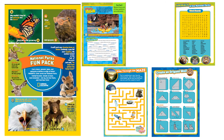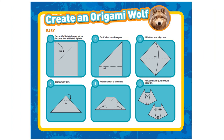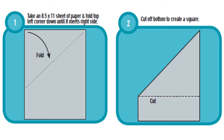If you can, when you're on that website, download the National Parks Fun Pack — there are many different puzzles and fun activities that you can do. If you get yourself a sheet of paper, we can create an origami wolf. The next slides will go through each step of making the wolf. If you take your eight-and-a-half by eleven sheet of paper, which is just the size of a normal piece of printer paper...